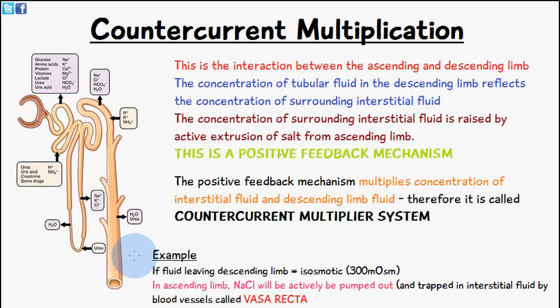Welcome to 5-Minute School. In today's video we're going to talk about counter-current multiplication, which is the interaction between the ascending and descending limb. The concentration of the tubular fluid in the descending limb reflects the concentration of the surrounding interstitial fluid. This concentration is raised by the active extrusion of salt from the ascending limb, and this is a positive feedback mechanism because we multiply the concentration of the interstitial fluid and the descending limb fluid — so it's known as the counter-current multiplier system.